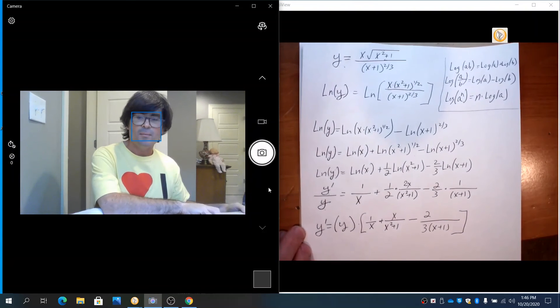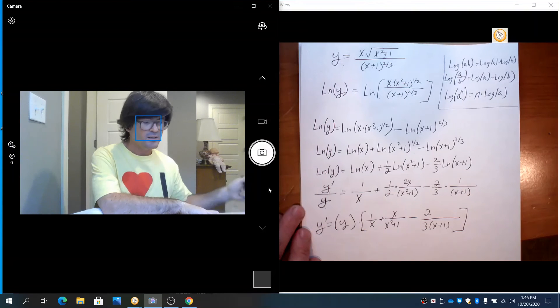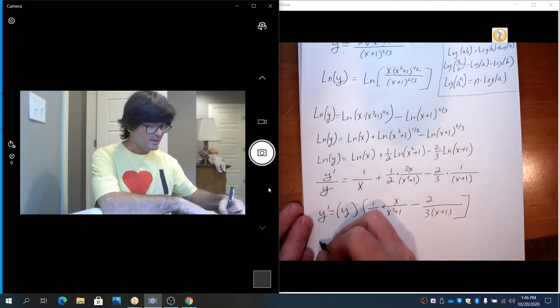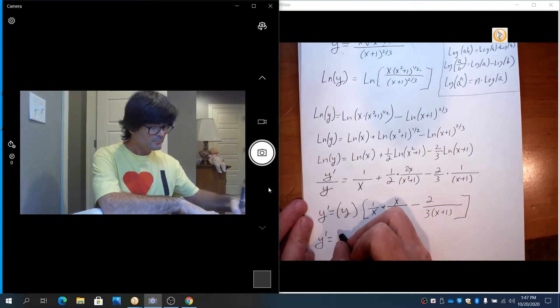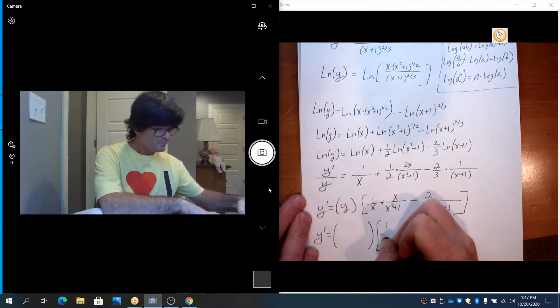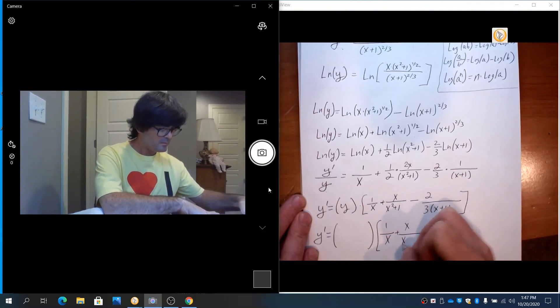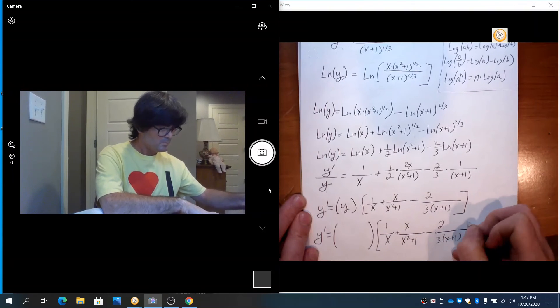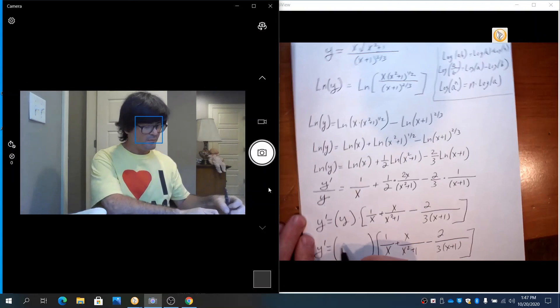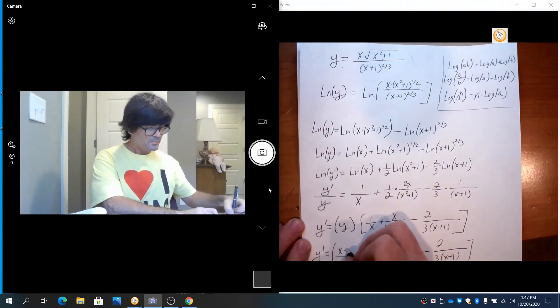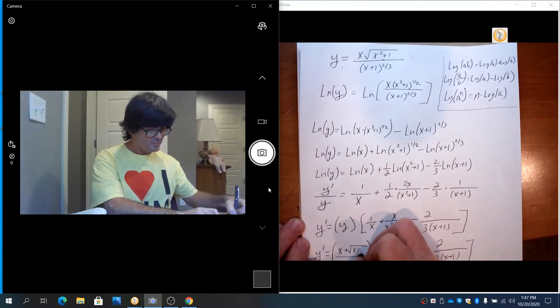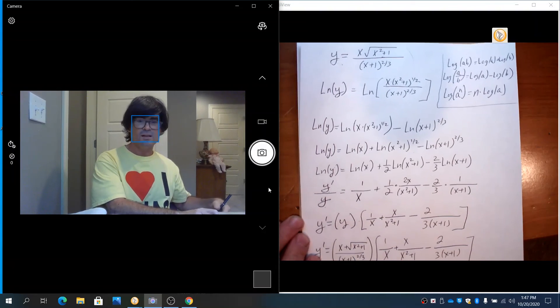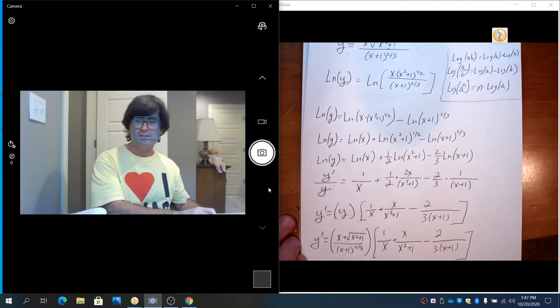So that is a correct derivative. It is in terms of x and y. So if you do want to have only x, you have to take this y equals that big mess and stick it in right there. So let's just write this down one more time. y prime equals y times those terms. And so instead of y we're going to have x times the square root of x squared plus 1 over x plus 1 to the two-thirds. That is my full derivative in terms of x all done.